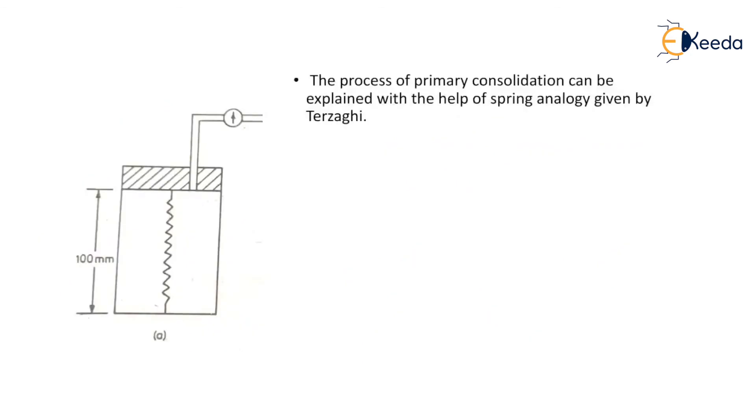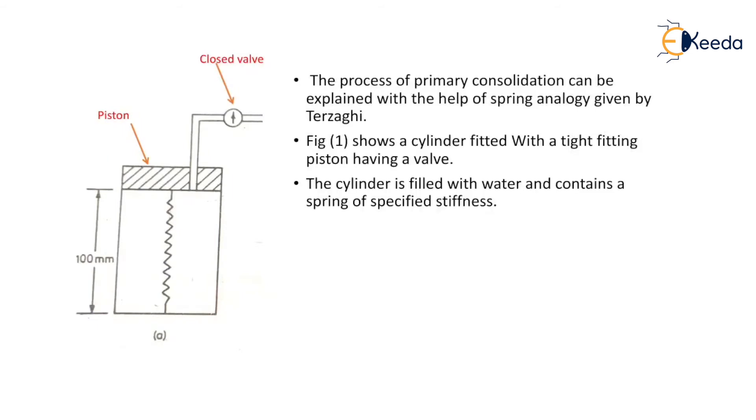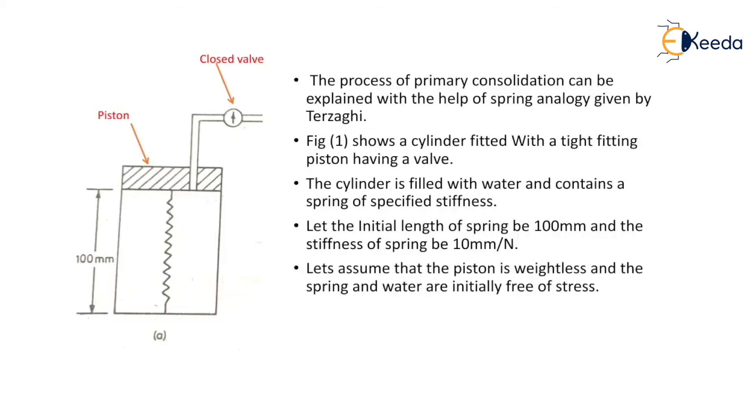The process of primary consolidation can be explained with the help of spring analogy given by Terzaghi. The figure shows a cylinder fitted with a tight fitting piston and having a valve which is initially closed. The cylinder is filled with water and contains a spring of specified stiffness. Let the initial length of the spring be 100 mm and the stiffness of spring be 10 mm per newton. That means if we apply load of 1 newton, the compression in the spring will be of 10 mm. Let's assume that piston is weightless and the spring and the water are initially free of stress.